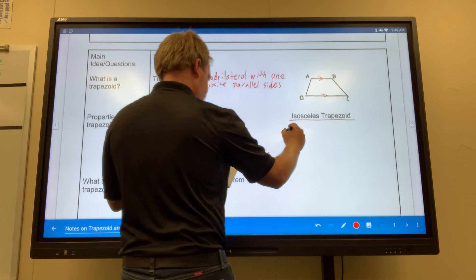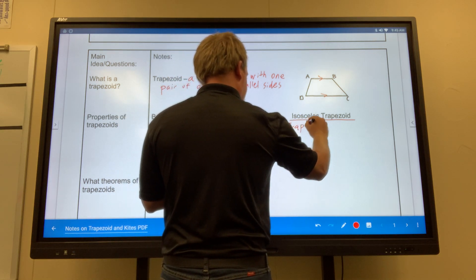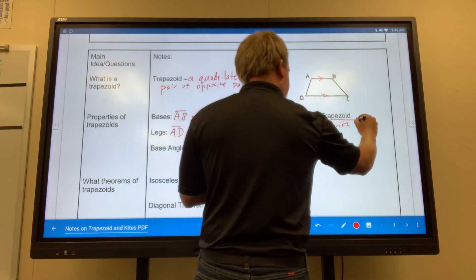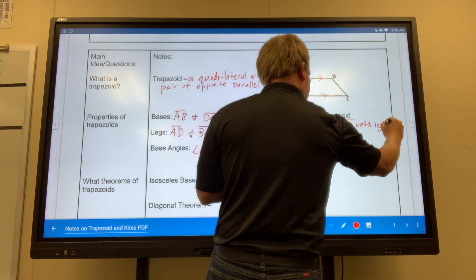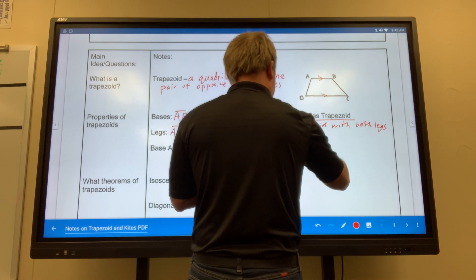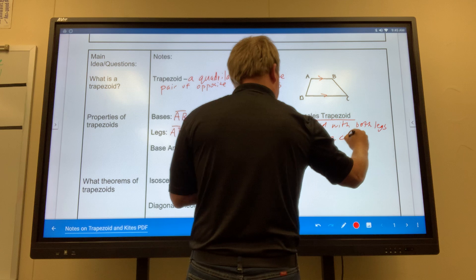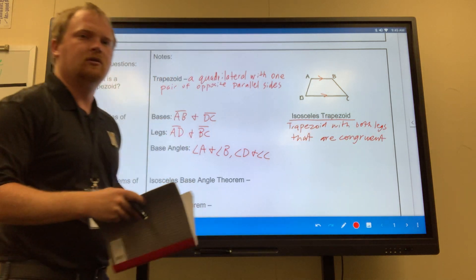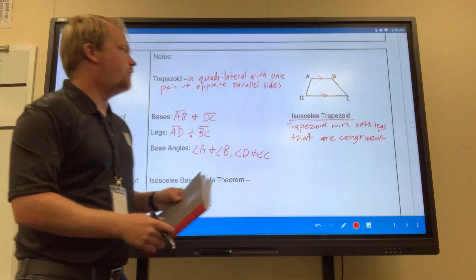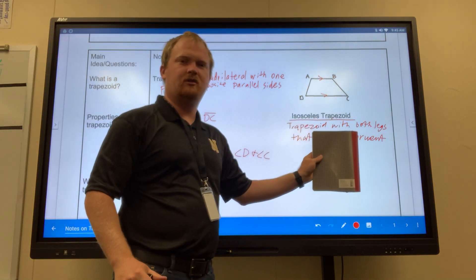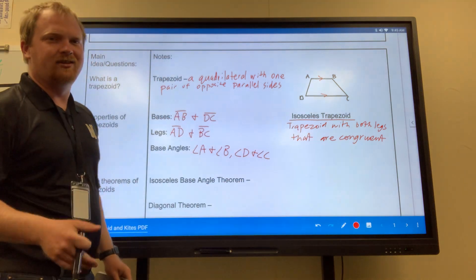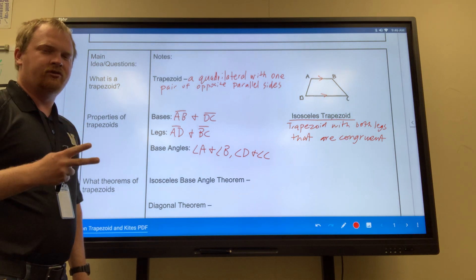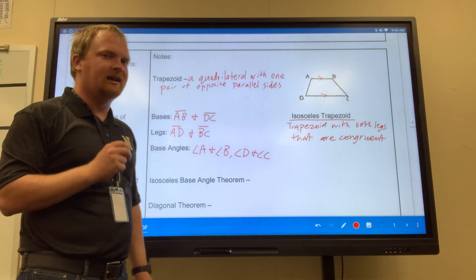So how would this work right here? Well, it is a trapezoid with legs, with both legs that are congruent. If both the legs are congruent, then it's an isosceles trapezoid. It has to have two congruent sides, which typically is always going to be the legs.